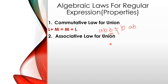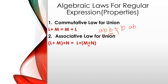Next is associative law for union. Union satisfies the associative law: L union (M union N) is equal to (L union M) union N. This associative law also holds for concatenation.